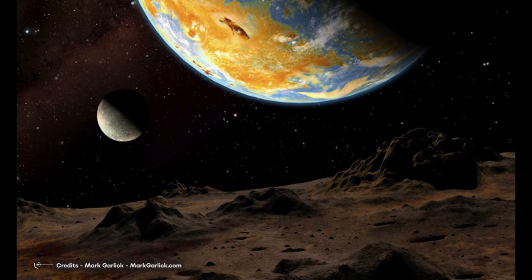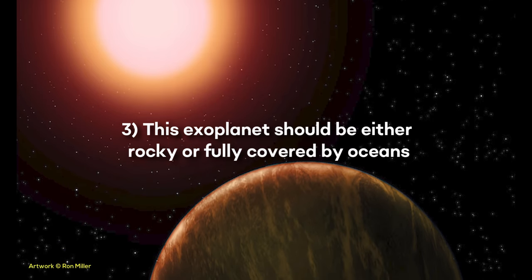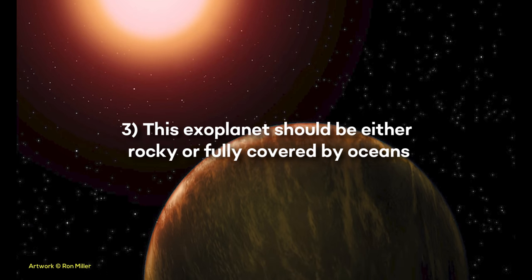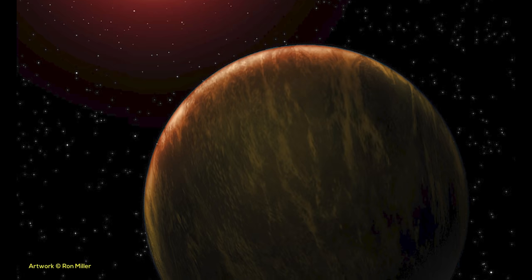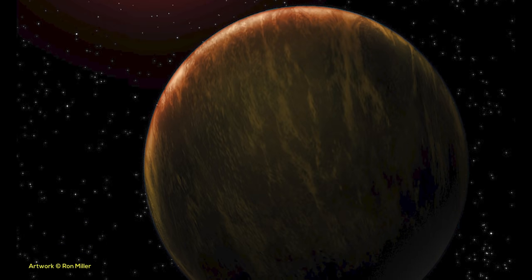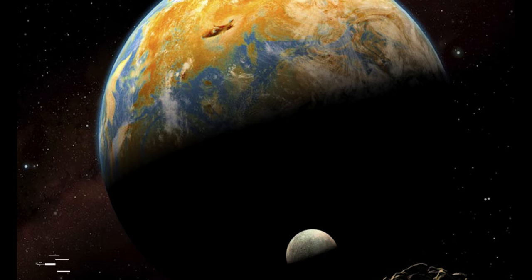But that's not all. In fact, 3. This exoplanet should be either rocky or fully covered by oceans. This is good information. Actually, our planet models predict that a planet with a radius of only 1.5 times the Earth's radius would have this property.